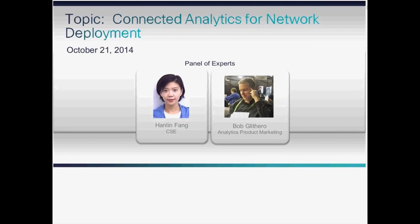Joining Jun today is Hanlyn Fang and Bob Glithero. Hanlyn is a Senior Product Manager at Analytics BU, managing Connected Analytics for Network Deployment. With over 15 years of experience in technology and product management, she defines the CAN-D product roadmap and prioritizes release requirements, drives GTM strategy with service enablement process, and guides engineering teams on solution delivery. Hanlyn holds an MS in Computer Science and an MBA, focusing on Entrepreneurship Business Development with a passion to deliver solutions that truly solve customers' problems.